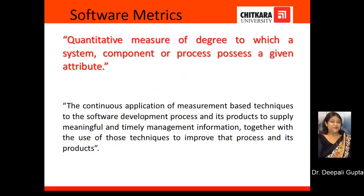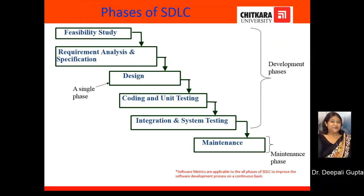Before we discuss Cyclomatic Complexity Matrix, let us first understand the term Software Metrics. Software Metrics can be defined as a quantitative measure of the degree to which a system, component, or process possesses a given attribute. The continuous application of these Software Metrics to the Software Development Process helps to improve that process and its products. These Software Metrics are applicable to all the phases of SDLC, right from the feasibility study to the maintenance phase, in order to improve the development process on a continuous basis.